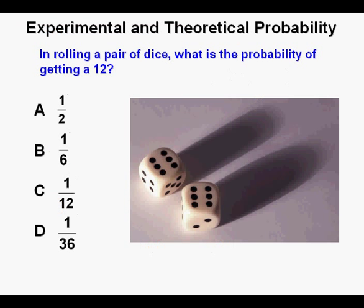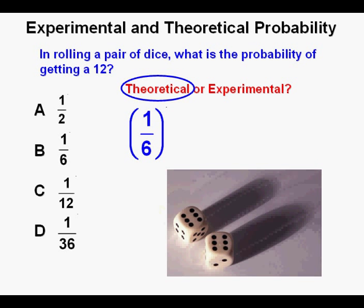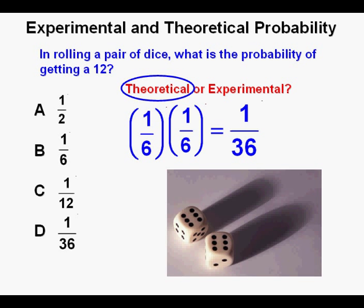Next problem: in rolling a pair of dice, what is the probability of getting a 12? Since we don't have results of attempts, this probability is theoretical. The probability of rolling a 6 on one die is 1 over 6. The probability of the second die also being a 6 is also 1 over 6. To combine the two probabilities, we multiply them together to get 1 over 36. We circle our correct answer: D.